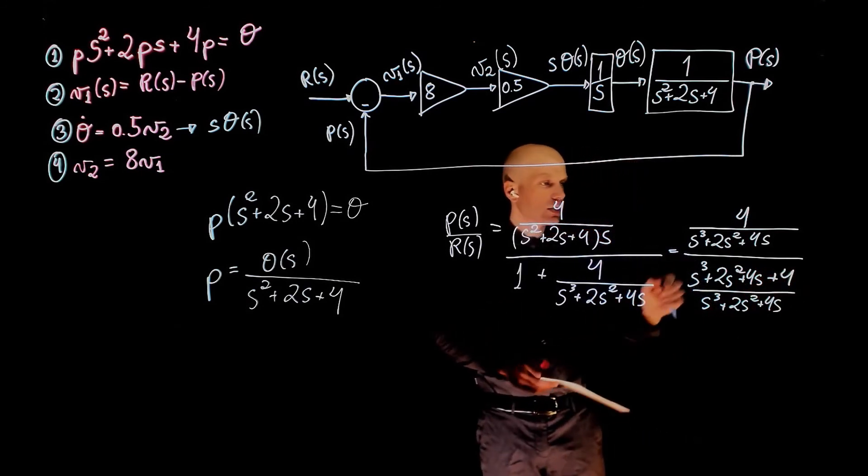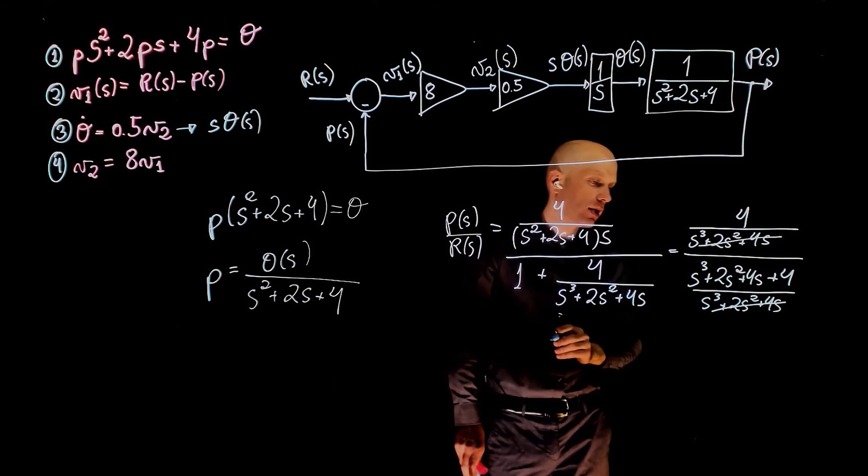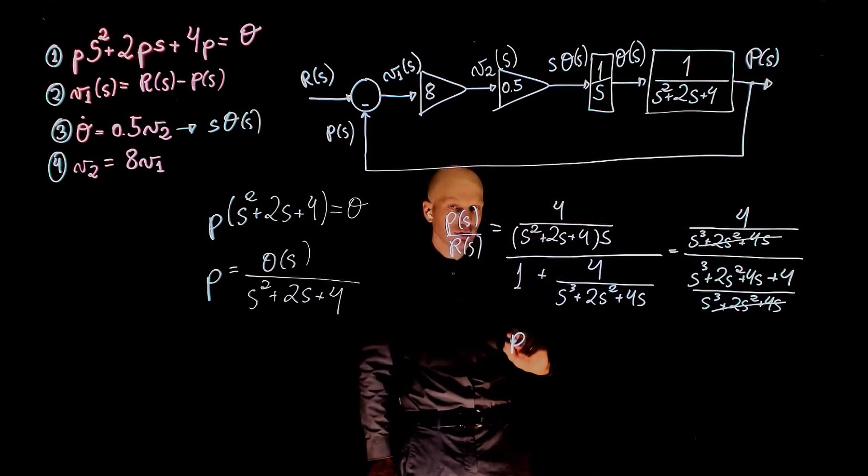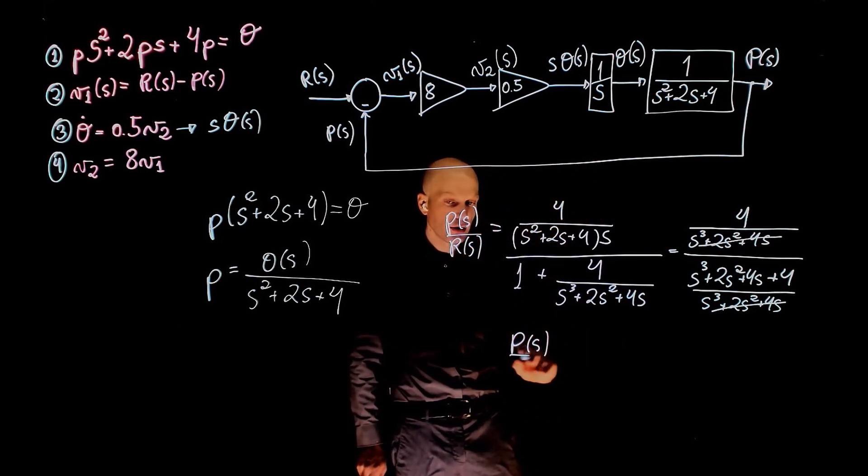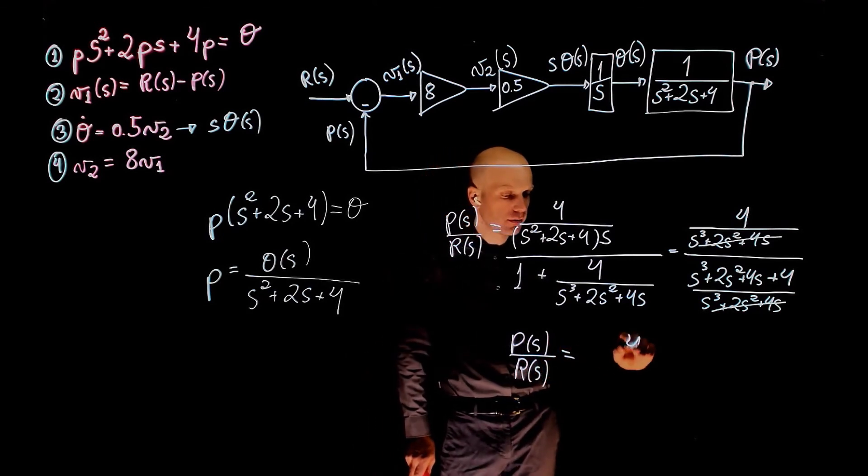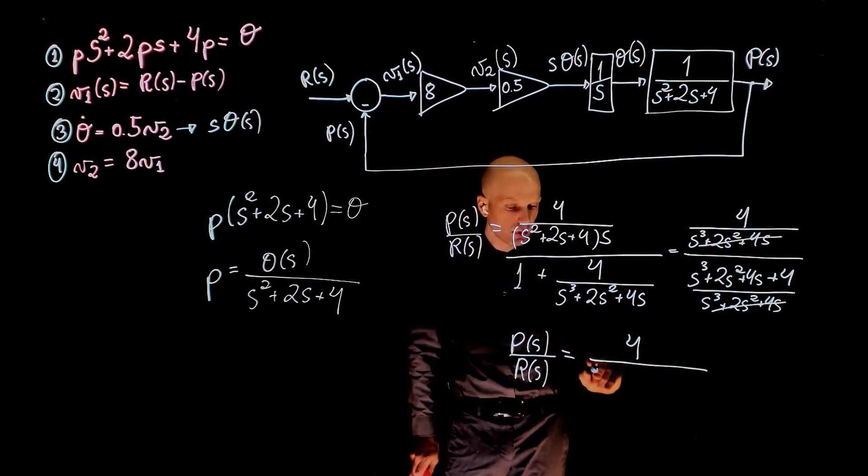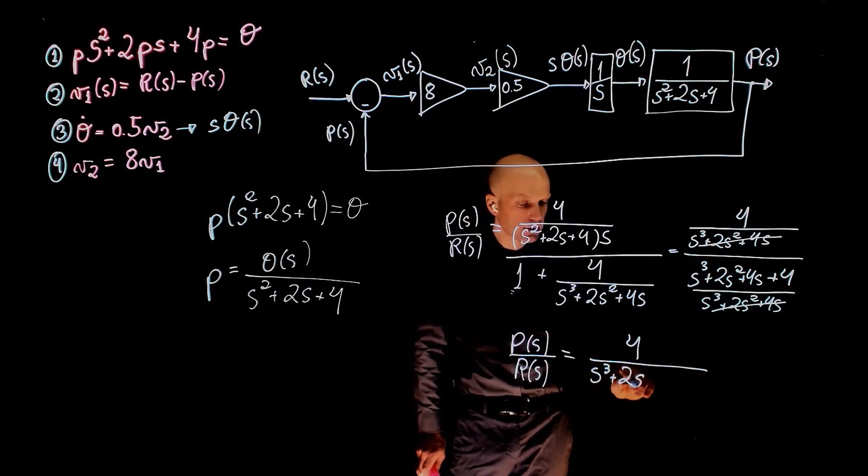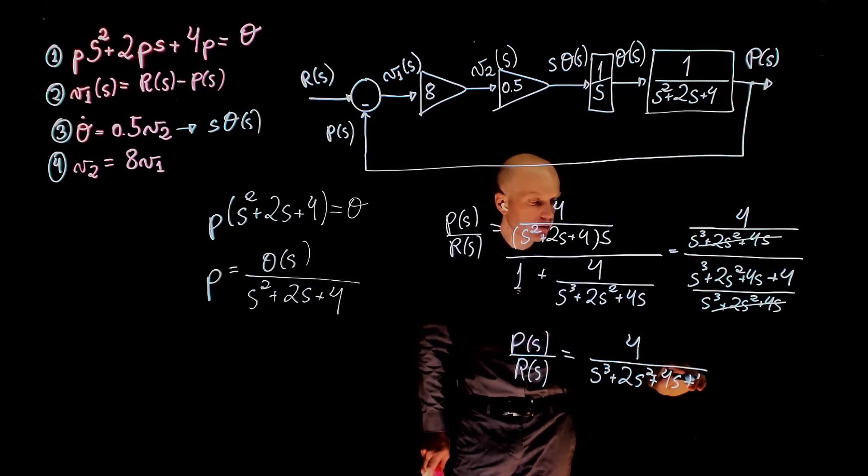We notice now that this denominator cancels that denominator, and the final transfer function p of s over r of s is simply 4 over s to the power of 3 plus 2s squared plus 4s plus 4.